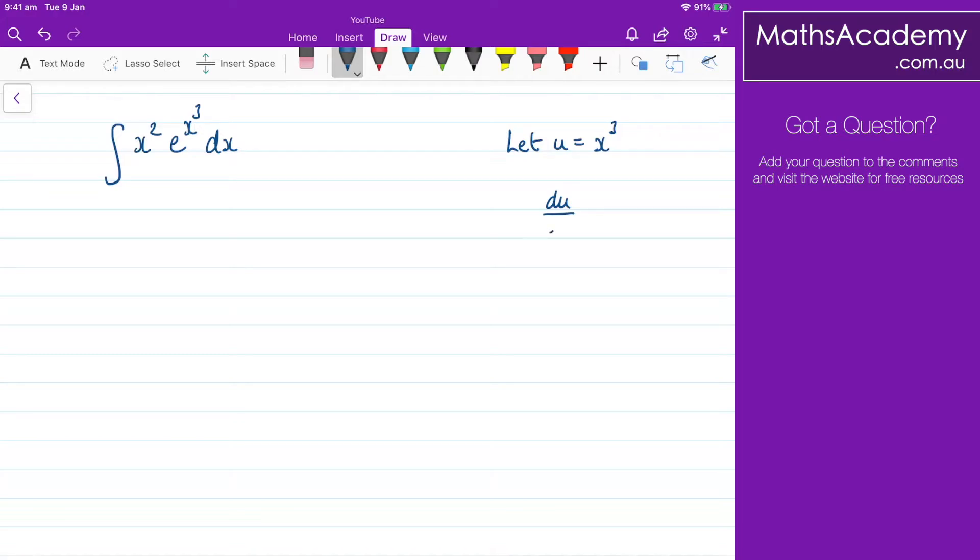If I differentiate that, I get that du by dx will be 3x squared. And now I need to find what dx will be. Well, dx will be equal to du over 3x squared.